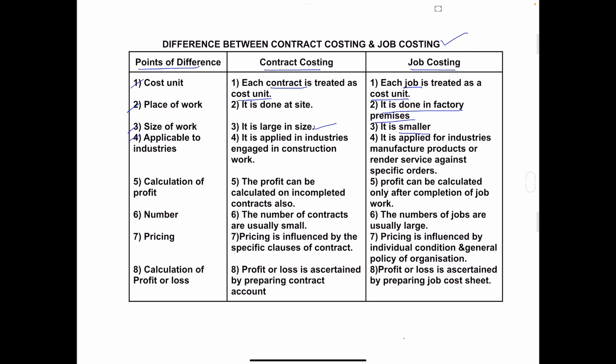Fourth: Applicable Industry. Contract costing is applicable to the civil engineering industry — companies engaged in construction work or infrastructure activities like dams, bridges, and roads adopt the contract costing method. Job costing is applicable to industries engaged in manufacturing products or providing services, and these types of industries adopt the job costing method.